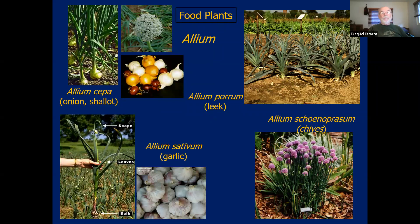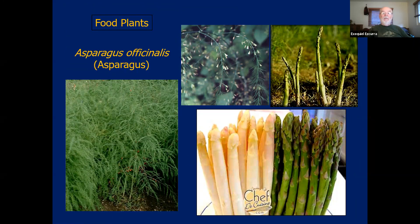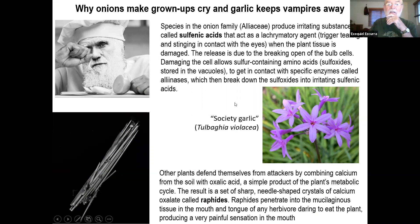Food plants in the family Alliaceae include the onion and shallots — Allium cepa — the leek, Allium porrum, garlic, Allium sativum, and chives, which we eat mostly because of their nice-smelling leaves — Allium schoenoprasum. The asparagus, Asparagus officinalis, also belongs in this family, believe it or not, despite the fact that it has highly pinnately divided leaves that don't look at all like monocots. The asparagus is deceptive but is a monocot and belongs in this family.